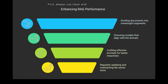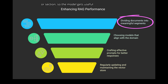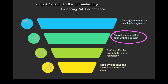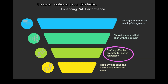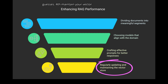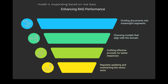How can you improve RAG performance? Here are a few proven tips. First, always use clean and well-structured documents — split them into meaningful chunks, like by paragraph or section, so the model gets useful context. Second, pick the right embedding model for your domain: if you are working in healthcare, use BioBERT; for legal work, go with LegalBERT. Third, prompt engineering matters — guide the model with clear instructions so it focuses on retrieved content, not guesses. Fourth, maintain your vector database — update it regularly if your documents change and remove duplicates or outdated content. And finally, always ground your outputs — make sure the model is responding based on real data, not hallucinating. Small improvements in each of these areas can dramatically boost your RAG system's performance.